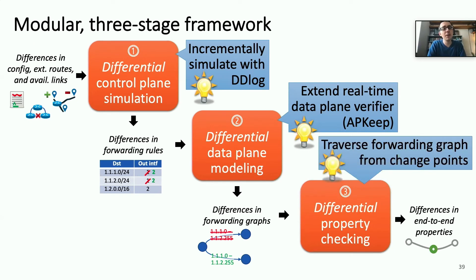Finally, for the differential property checking stage, rather than traversing every single forwarding graph for every equivalence class and traversing that forwarding graph from all entry points into the network, we instead rely on the set of differences in the forwarding graphs to know precisely which equivalence classes have changed as well as where in that forwarding path they've changed, which allows us to do a restricted traversal of those forwarding graphs and identify differences in end-to-end properties more efficiently.